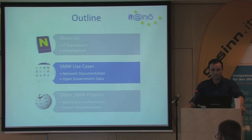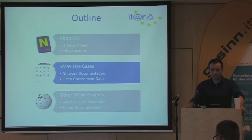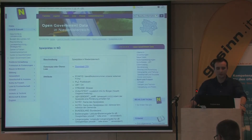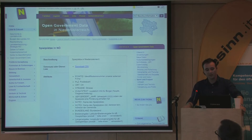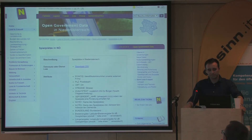The second use case I want to show you is a tool for open government data. Two years ago we launched a small project and started thinking about how we can publish some interesting data to the public. As a result, we created a new section on our website and published over 40 datasets of various government data. On this page you can see a dataset about our playgrounds in Lower Austria. In the middle of the page there is the metadata of this dataset. This is actually an XML file which is transformed via stylesheets and XML transformation to a static HTML website.